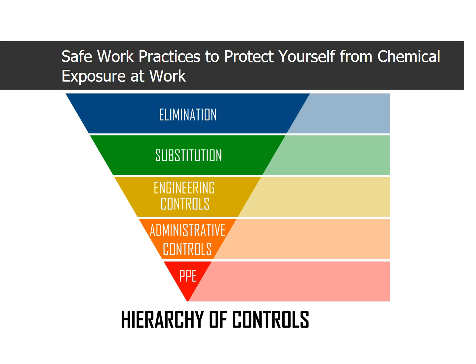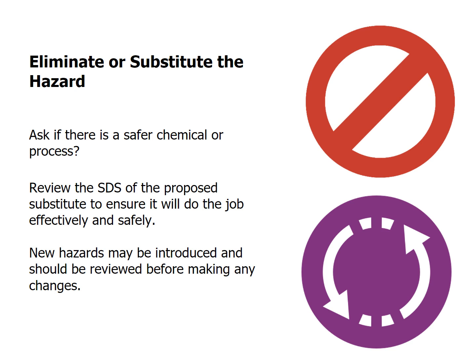Let's review safe work practices to protect yourself from chemical exposure at work. Elimination or substitution can be the best way to reduce a hazard. Ask if there's a safer chemical or process. Review the SDS of the proposed substitute to ensure it will do the job effectively and safely. New hazards may be introduced and should be reviewed before making any changes.